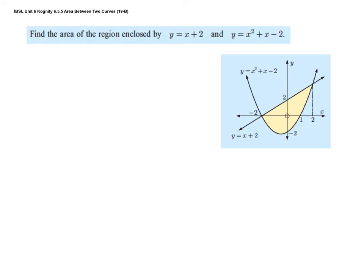As an example, here we have the graph y = x + 2 and y = x² + x − 2 — a line and a parabola — and it says find the area of the region enclosed by those two graphs. 'Enclosed by' means we go ahead and find the intersection points first, then set up our integral. To find intersections, we set up a system of equations. Since they're both equal to y, we set x + 2 equal to x² + x − 2.